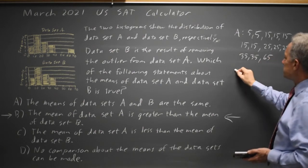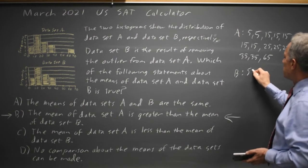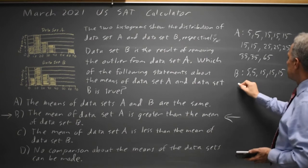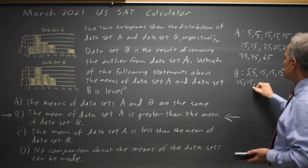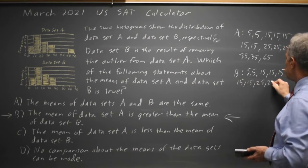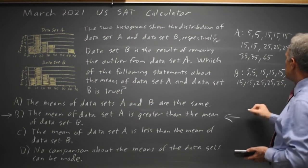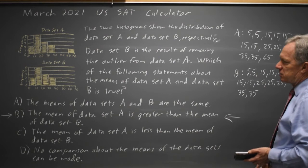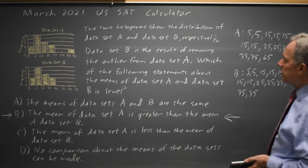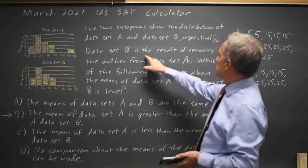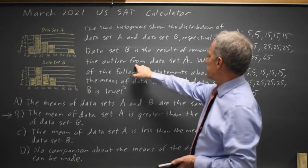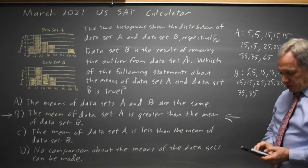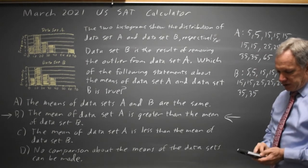Data set B is the same thing: 5, 5, 15, 15, 15, 15, 15, 15, 25, 25, 25, 35, 35 — but we leave out the 65. The outlier: data set B is the result of removing the outlier from data set A, which is the 65.